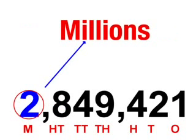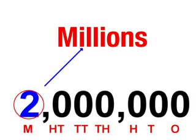In this number, the 2 is circled in red and it is also in the millions column. Therefore, it is not just 2 but 2 million.